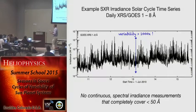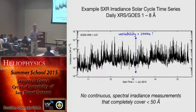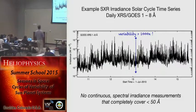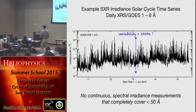There are no continuous spectrally resolved irradiance measurements in this wavelength range. What we do have are things like the GOES soft X-ray band. When you see news of a flare, usually what they're saying is there was a strong increase in the GOES 1-to-8 angstrom band. Taking all the data during the SDO era and plotting a daily average, you can see enormous variability — basically three orders of magnitude in the variability of the soft X-ray flux.